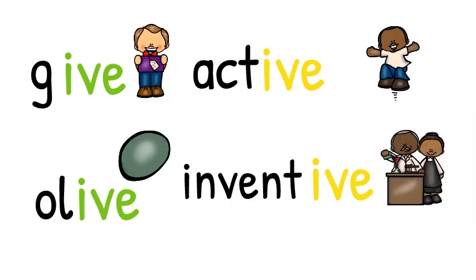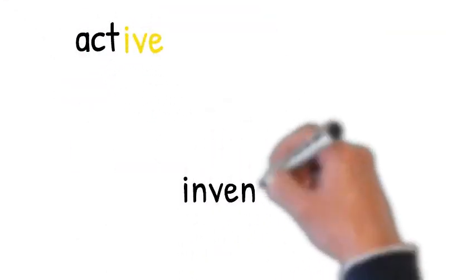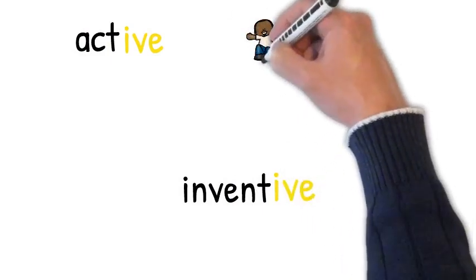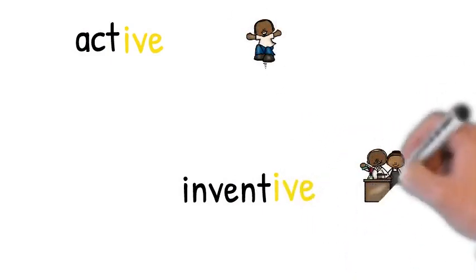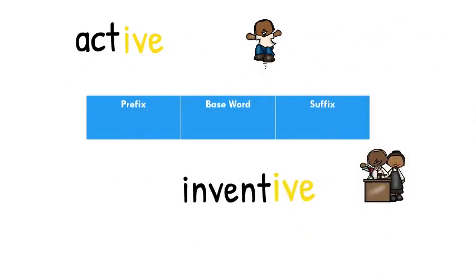There's one more thing that we need to talk about with I-V-E. In the word give and olive, I-V-E is a sound. But in the words active and inventive, the I-V-E is actually a suffix. Let's take a closer look at active and inventive. If I draw a base word grid and then I add in my base word act,